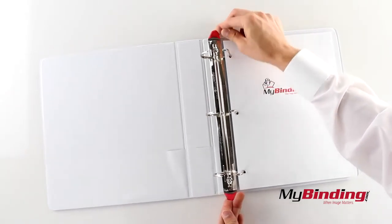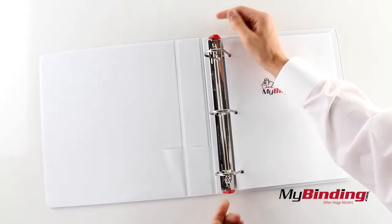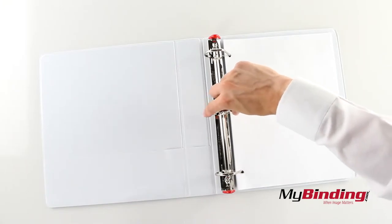Insert your three hole punch pages and either close the rings up by pressing the tabs back in or pinch the middle rings together.